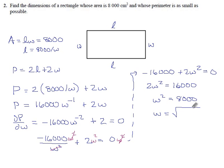W is the square root of 8,000, which is not a nice number. It's 89.4. The units are centimeters. And for the length, well, we have up here that length is 8,000 divided by W, which means the length is 8,000 divided by the square root of 8,000.